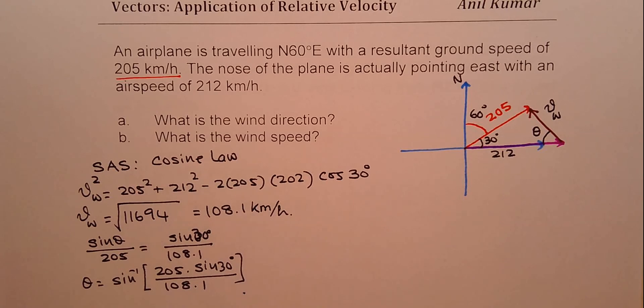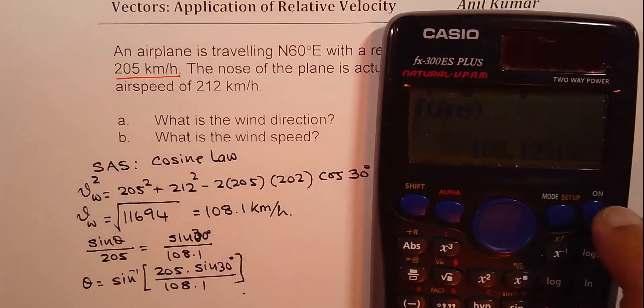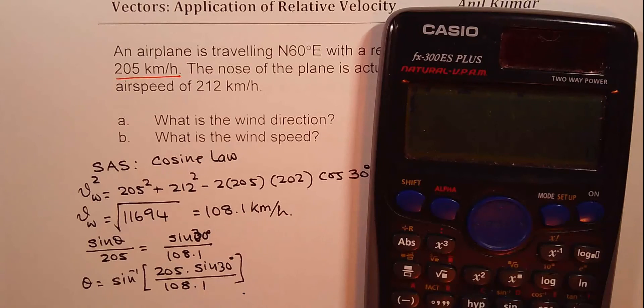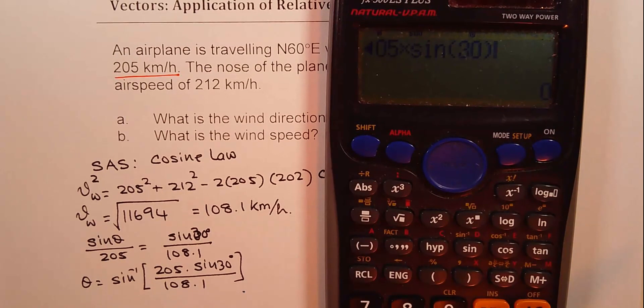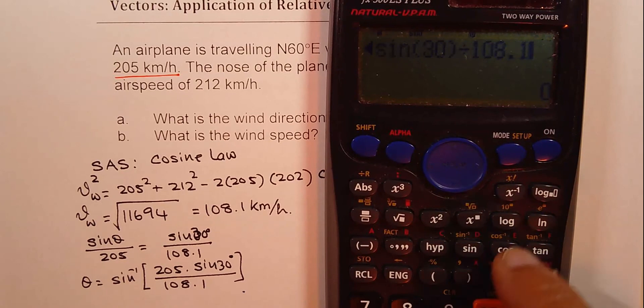So let us find this. So we will do shift sine inverse of 205 times sine of 30 degrees divided by 108.1 bracket close equal to.